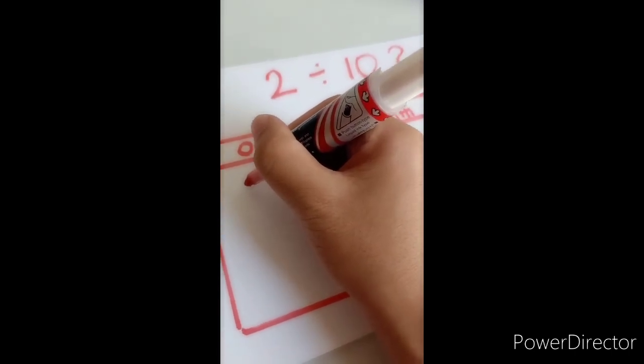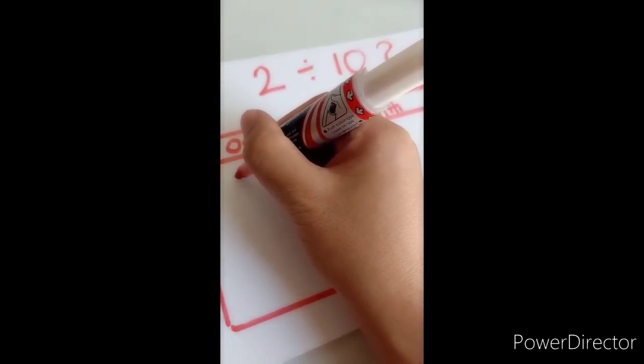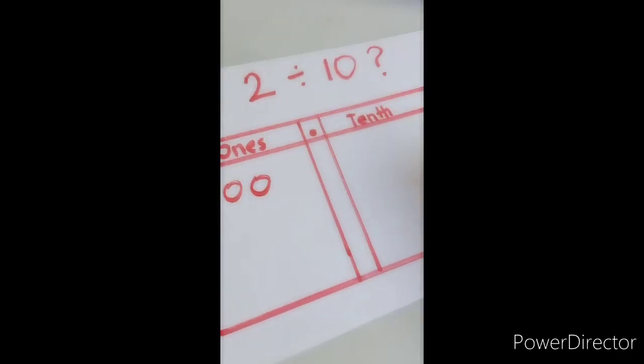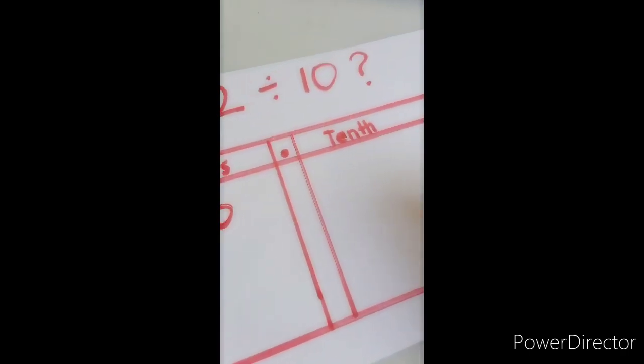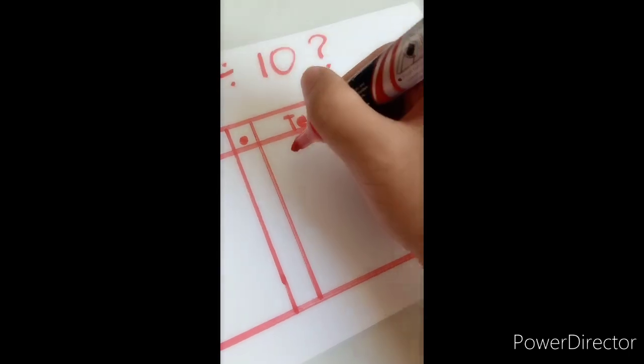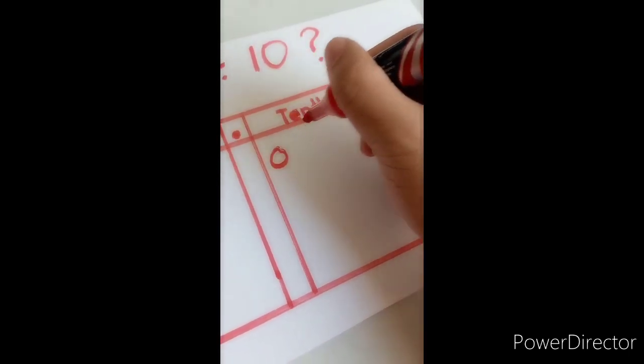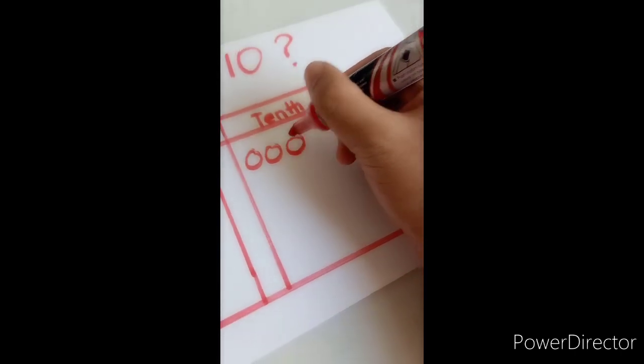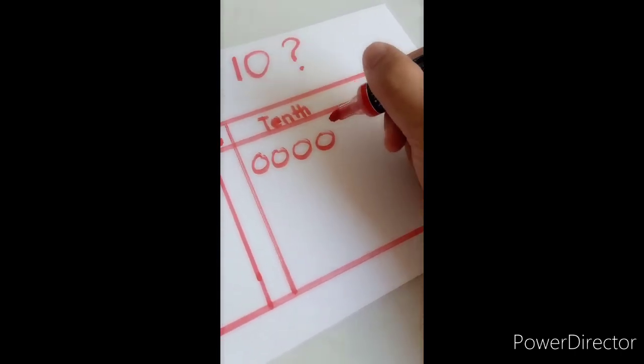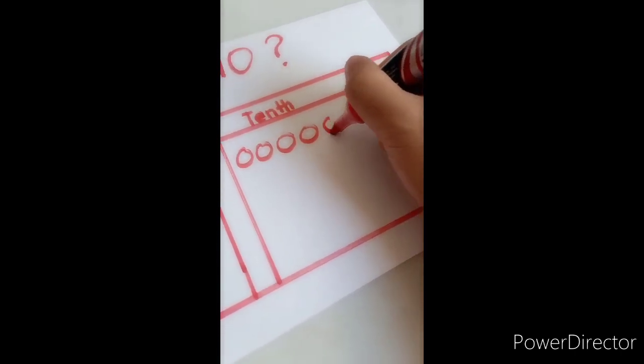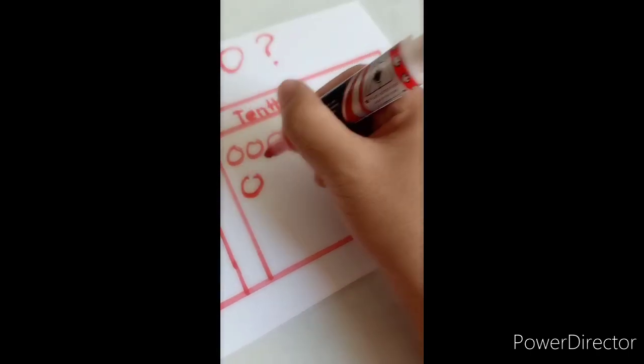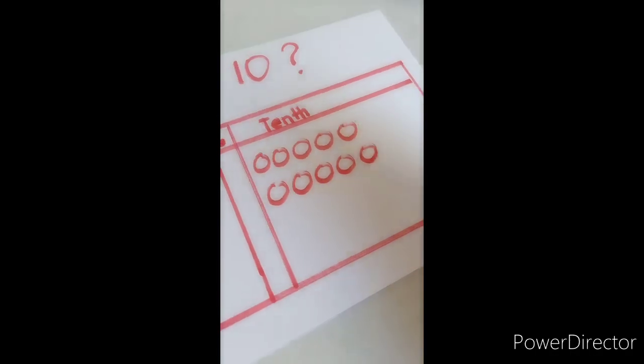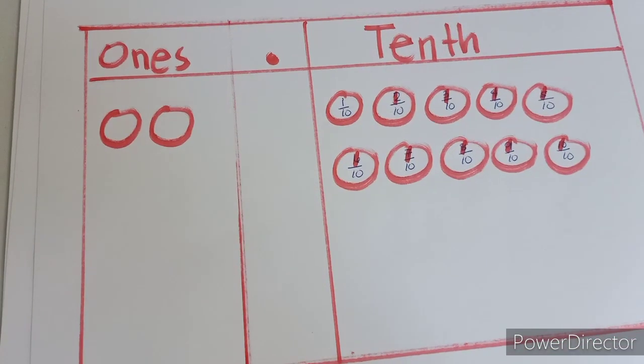We'll put 2 ones. How many tens? We will have to make 10. What would be the next step?